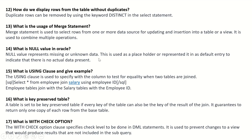What is the null value in Oracle? A null value represents missing or unknown data — undefined data. It is used as a placeholder to indicate that there is no actual data present. What is the USING clause? USING clause is used to specify which column to test for equality when two tables are joined. Example: SELECT * FROM employee JOIN salary USING (employee_id).